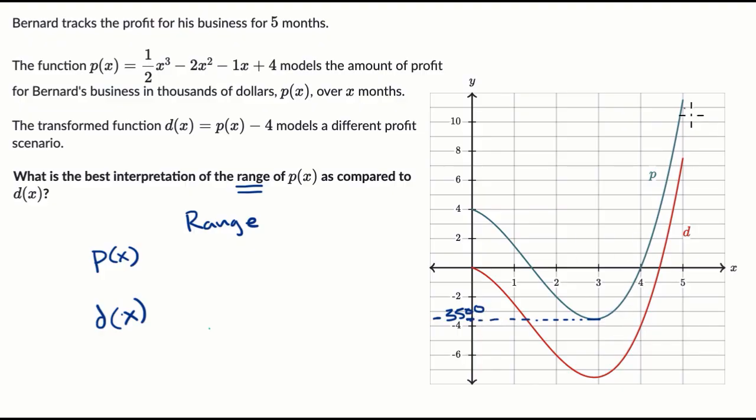And over the five months, the function would keep going, but we are bound, the domain I guess we could say, is from zero to five months. So at five months, it looks like we are at, what is this, this looks like about halfway between 11 and 12, so this is $11,500.